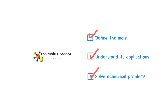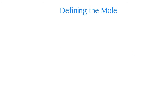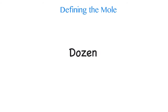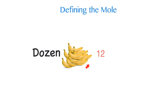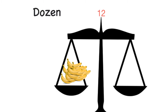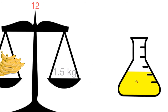When I tell you I have a dozen bananas, what does that mean? Yes, that means I have 12 bananas, because the word 'dozen' means 12. We can easily weigh a dozen bananas to find out their weight. But what about atoms and molecules — can we count a dozen atoms?